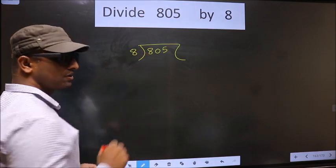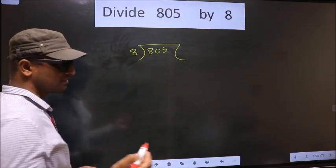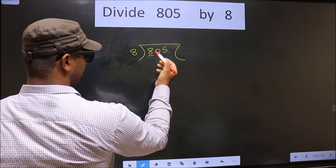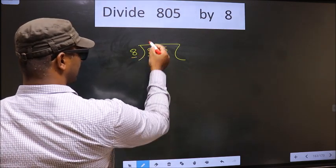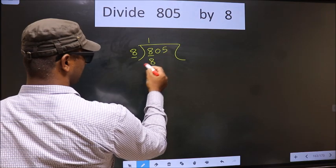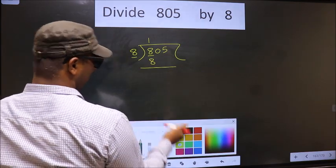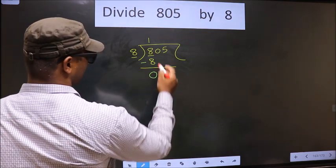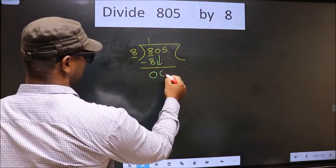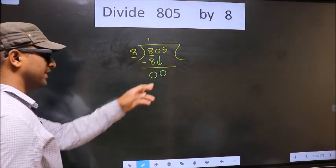Here we have 8, here also 8. When do we get 8 in the 8 table? 8 once is 8. Now you subtract: 8 minus 8 is 0. Now you bring down the beside number, so 0 down here.